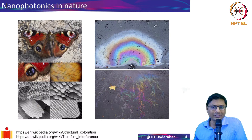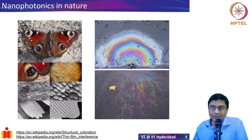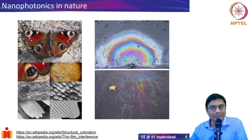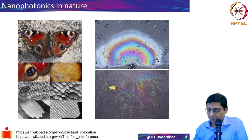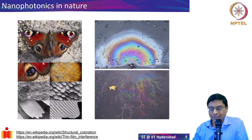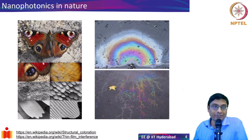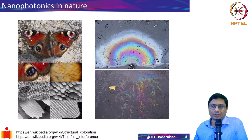Why does a certain pattern produce color? All of you may have seen CD discs or DVDs — if you look at them at an angle, you see colors appearing. A more common example is a small drop of oil on a road: a thin film of oil causes colors to appear when sunlight is reflected from it. Why does this happen? All of this is essentially light-matter interaction, and I hope that by the end of this course you will understand how to interpret these beautiful phenomena.